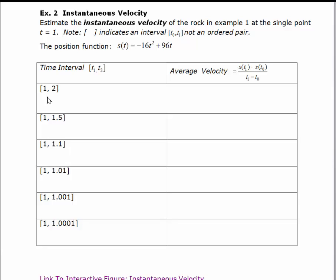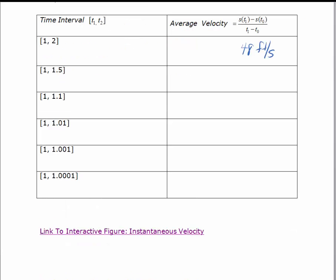You can see here, I want to find the average velocity on the interval from 1 to 2. This we actually already calculated in the last video. We found that to be 48 feet per second.